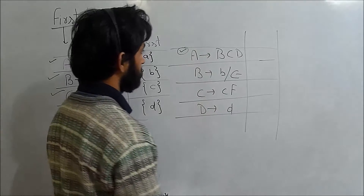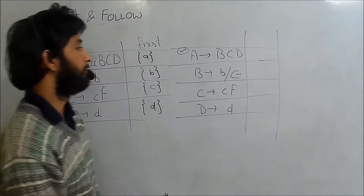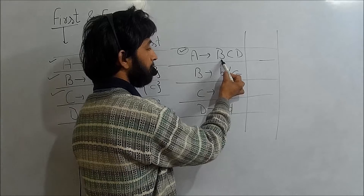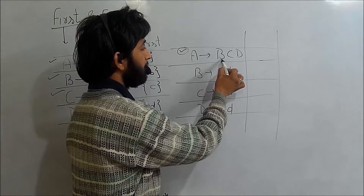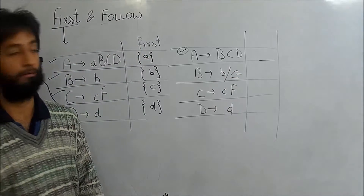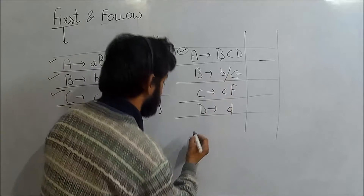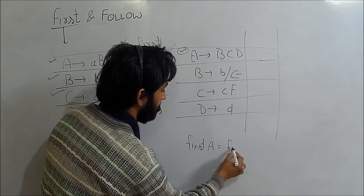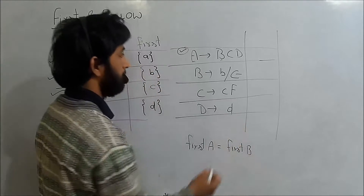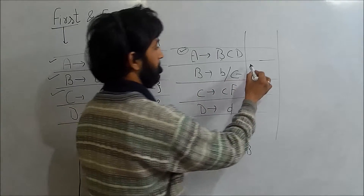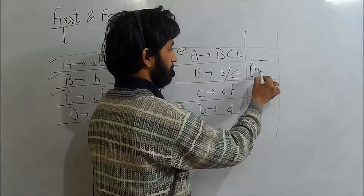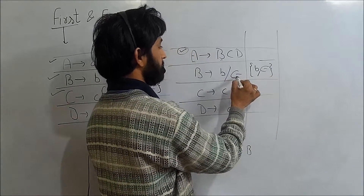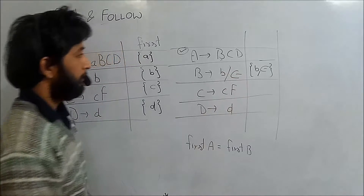Starting with the first production, A derives capital B, capital C, and capital D — all non-terminals. So FIRST of A will be FIRST of B. Here at the first position there is no terminal, only the non-terminal B. So FIRST of A equals FIRST of B. Now FIRST of B is 'b', but also epsilon. So epsilon is in FIRST of B.